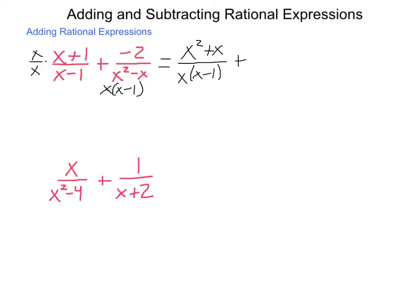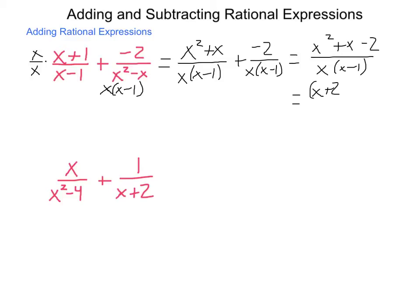To that I add negative 2 divided by x times x minus 1. Now my denominators are the same, so they go along for the ride: x times x minus 1. My numerator is x squared plus x minus 2. To make sure we have everything in simplest form, we factor the numerator: it equals x plus 2 times x minus 1, divided by x times x minus 1. Both have an x minus 1 term, so that simplifies out, and our final answer is x plus 2 divided by x.